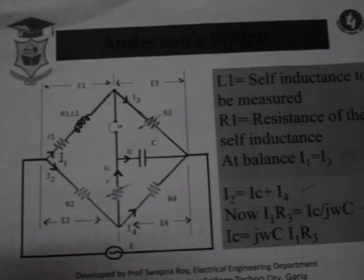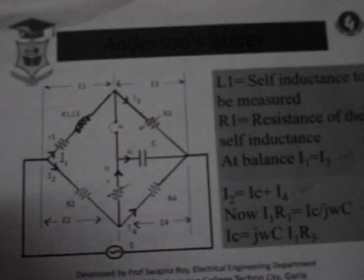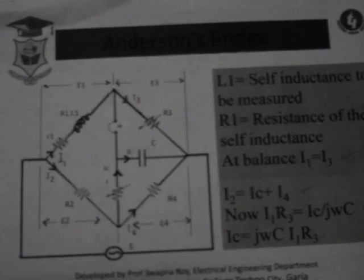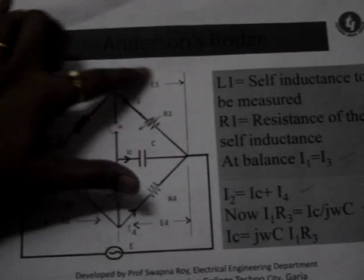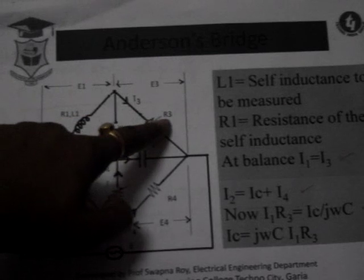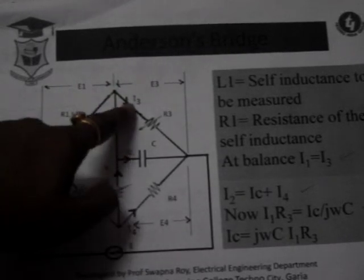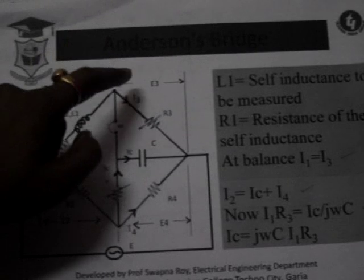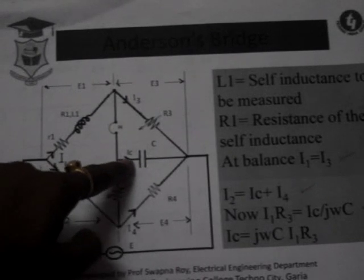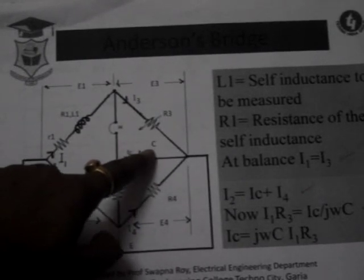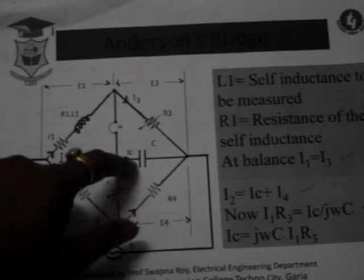At balanced condition, in the detector - here the detector is the headphone or CRO or even multimeter - there will be no potential drop between these two points. So this drop is I3 R3. Basically I3 will be equal to I1 because no current is flowing to the detector. So I1 R3, that is E3, and this capacitive drop Ic into Xc, that is Ic by j omega C, will be equal.